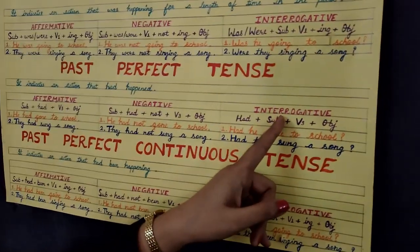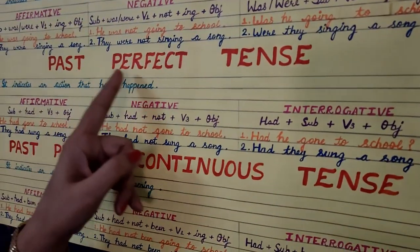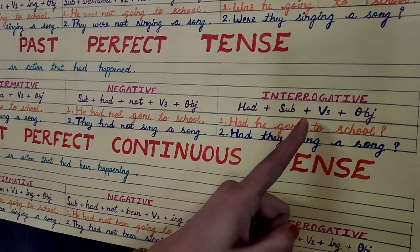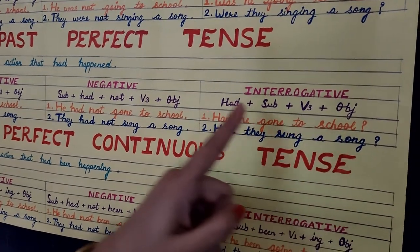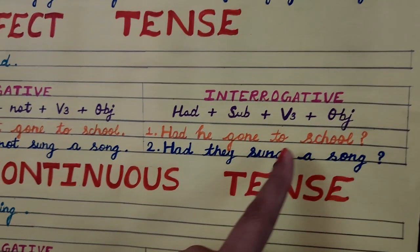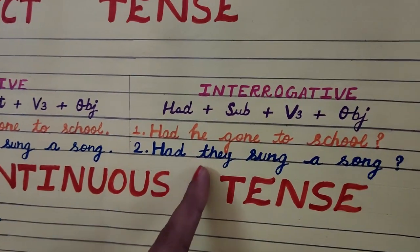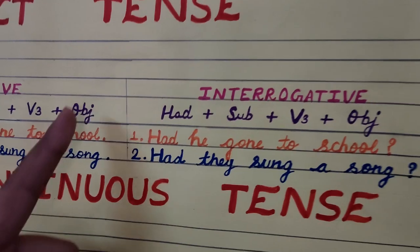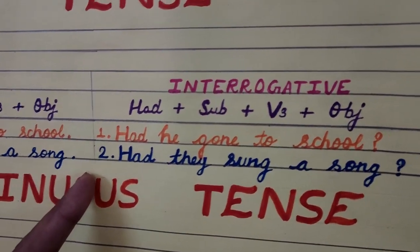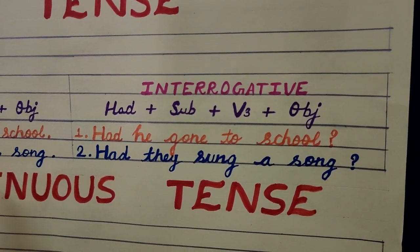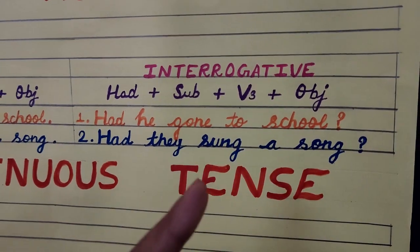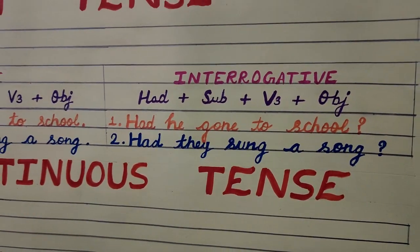Now let's move towards the interrogative sentence of past perfect tense. Here you can see the structure: had plus subject plus verb three plus object. For example: Had he gone to school? Had they sung a song? Here you can see the helping verb had is at the starting while making an interrogative sentence, and you have to put a question mark at the end.